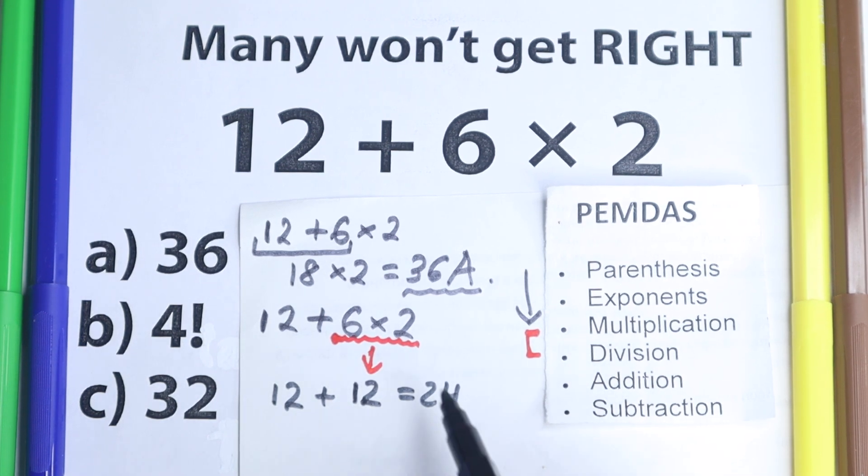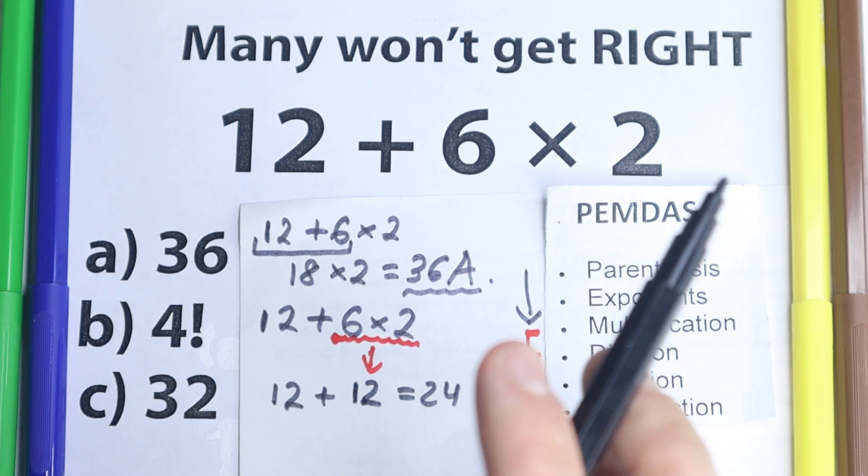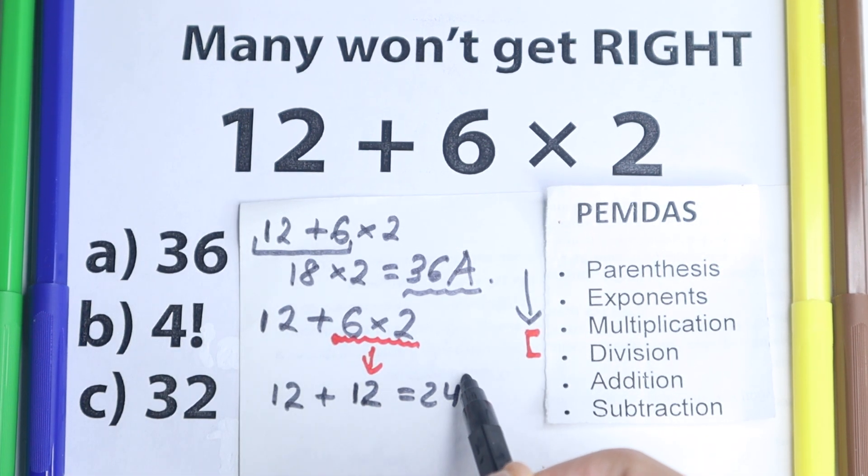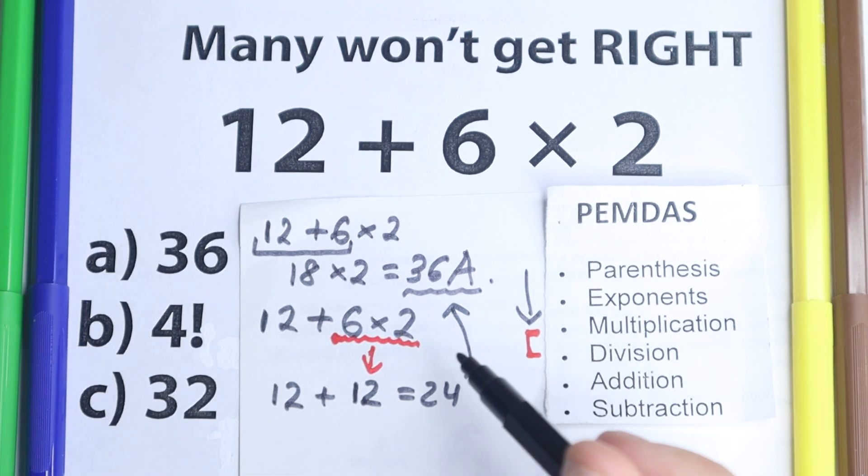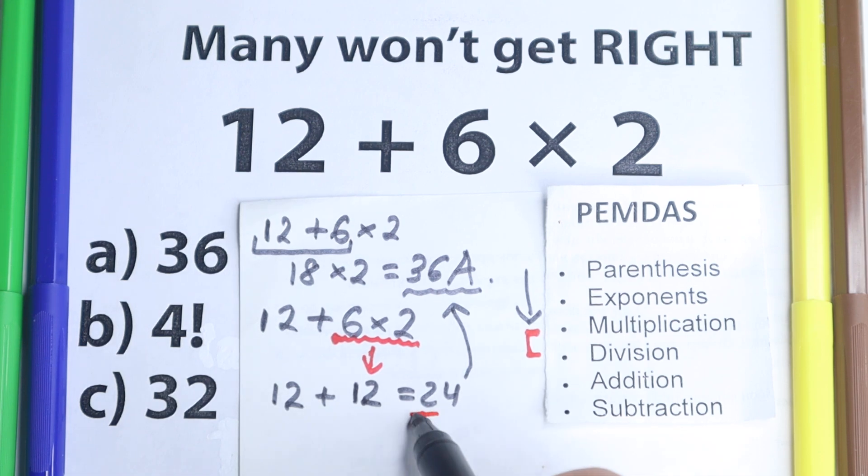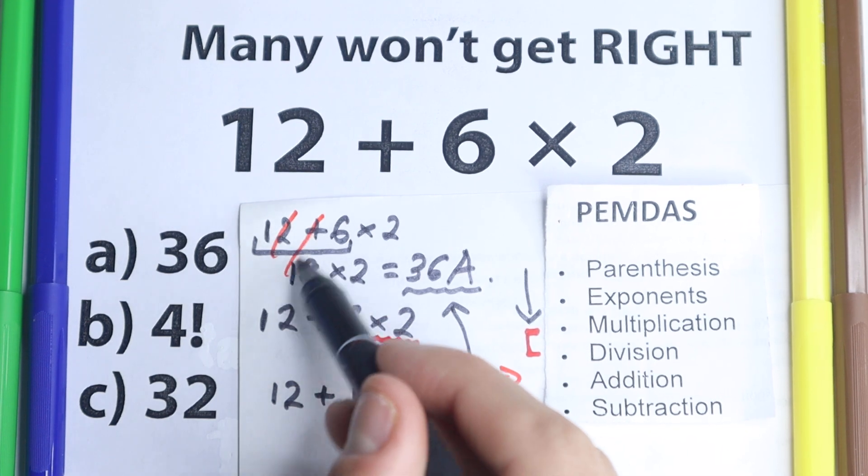And then a lot of students ask, okay, what about an option right here? We have 24, but we don't have this option right here. We have 4 factorial, this is not on first sight the same. We have 32, 36. And then part of students go back to this 36, which is absolutely wrong, because according to the correct order of operations, we need to prefer this 24, which is absolutely the correct answer according to PEMDAS.